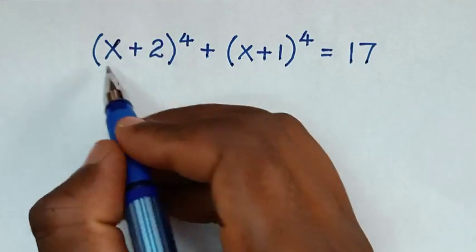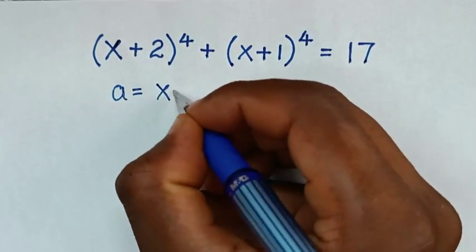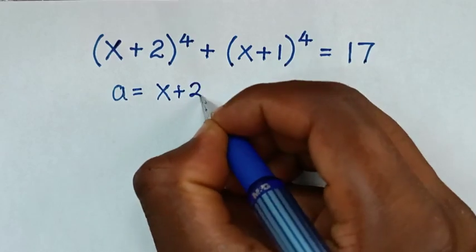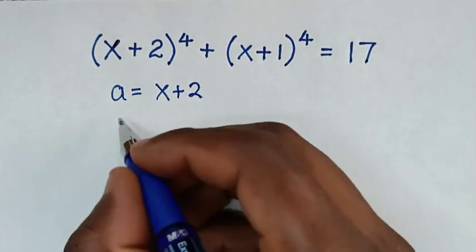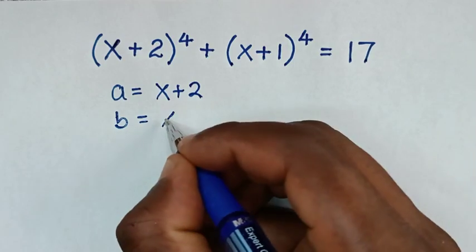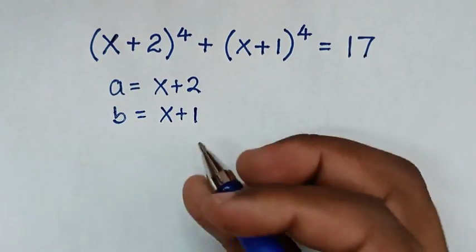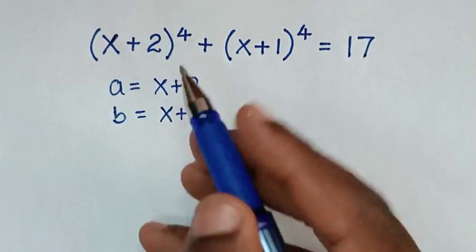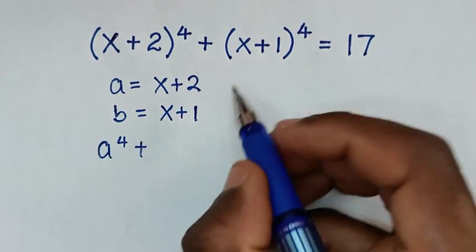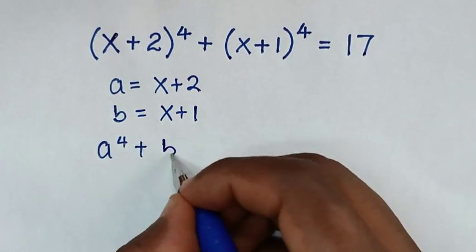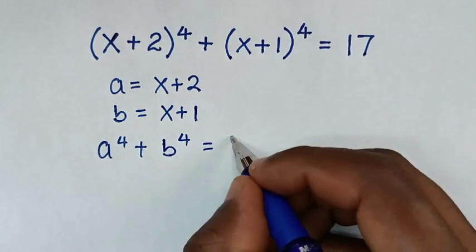In the first step, inside the bracket x+2, we let a = x+2, and also inside the bracket x+1, we let b = x+1. Then it will be a⁴ + b⁴ = 17.